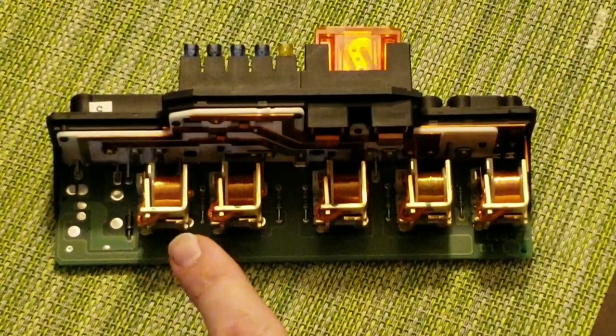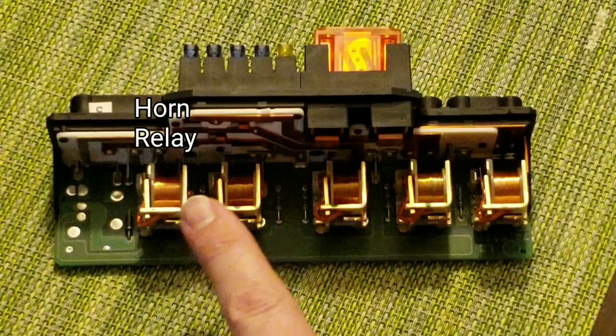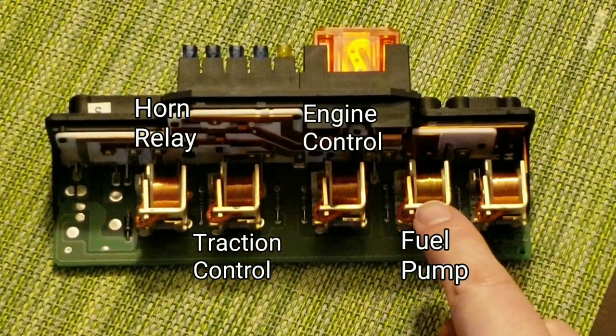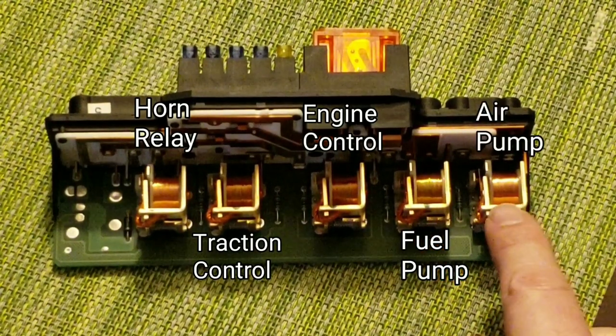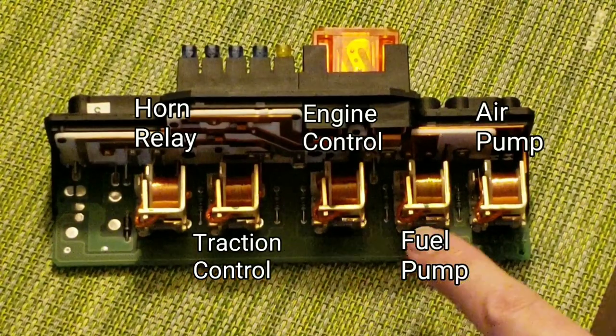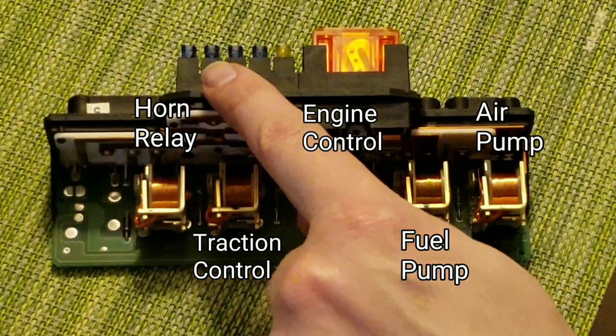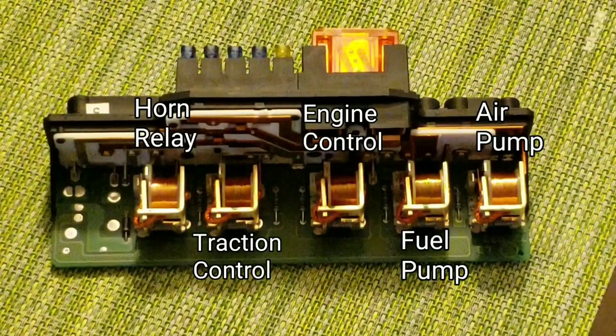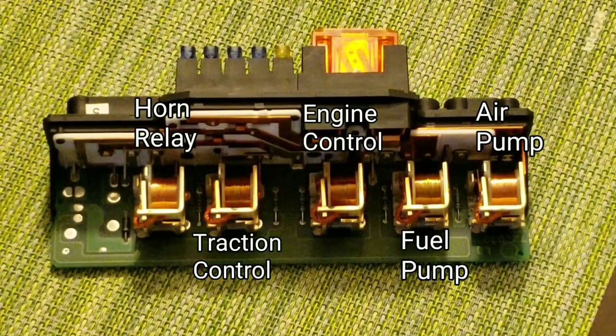Starting from left to right, we have the horn relay, traction control relay, engine control relay, the fuel pump relay, and the air pump relay. I've inspected all of these relays and all of their corresponding fuses. When you're having an electrical problem with the Crossfire, probably a good idea to check all of your fuses and inspect these relays.